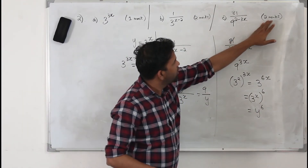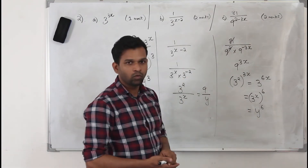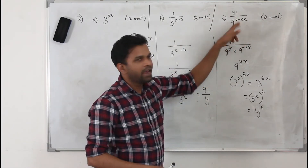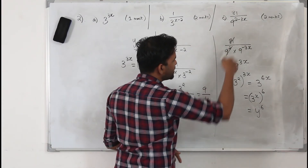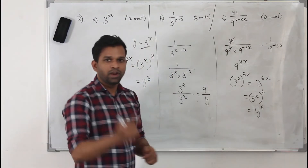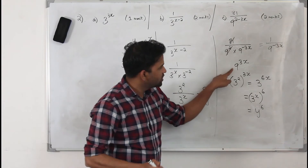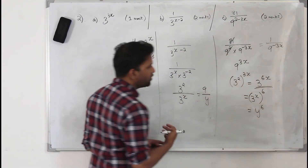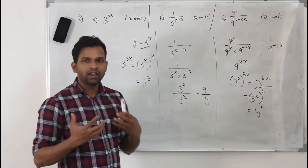To recap part c: keep 81 as it is, split 9 to the power 2 minus 3x into 9 squared and 9 to the power minus 3x. Cancel 81 and 9 squared, leaving 1 upon 9 to the power minus 3x. Bring it to the numerator to get 9 to the power 3x. Then change base 9 to 3 squared: 2 times 3x gives 3 to the power 6x. Since y equals 3 to the power x, write this as 3 to the power x, whole to the power 6, which is y to the power 6.